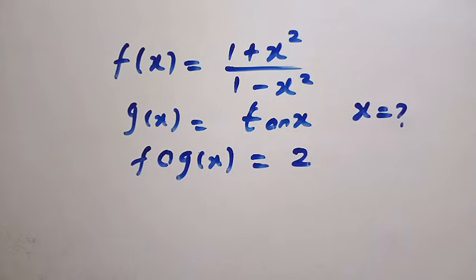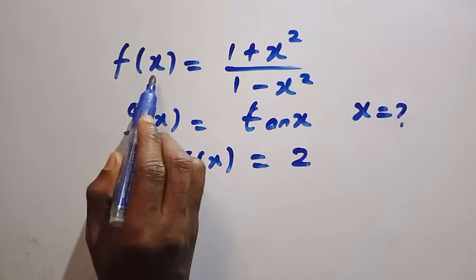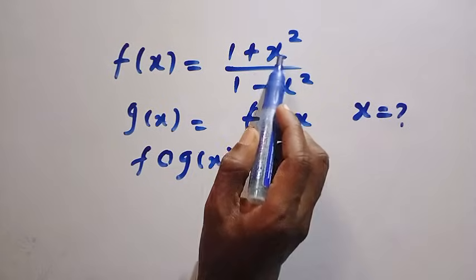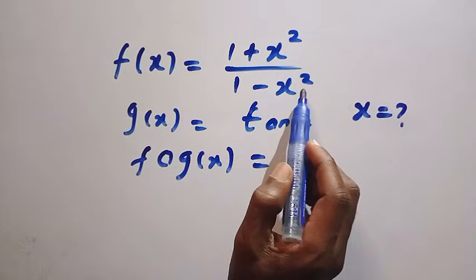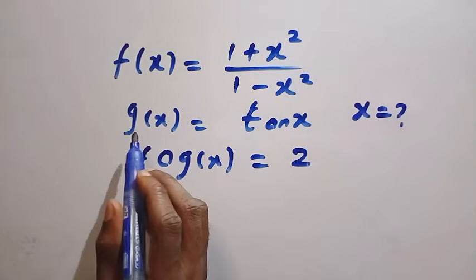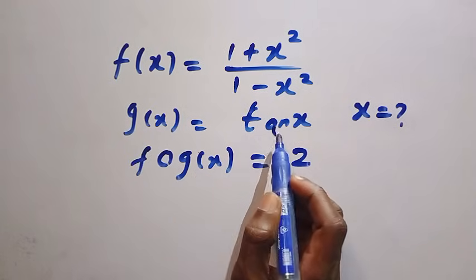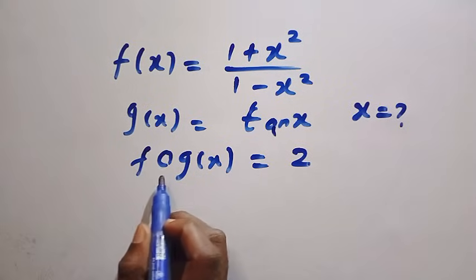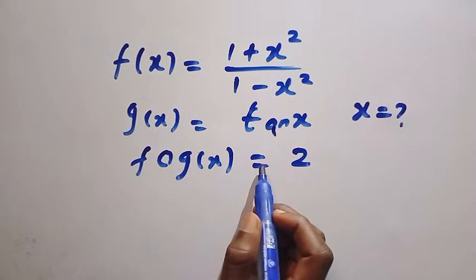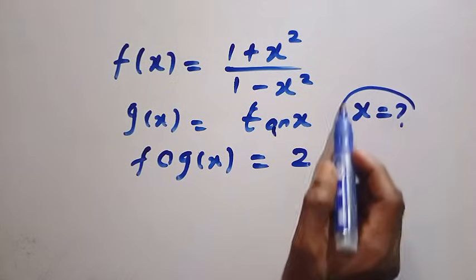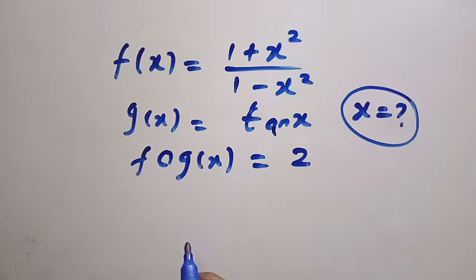Good day viewers, you are welcome. How to solve these nice functional equations: given that f(x) = (1 + x²) / (1 − x²), and also we have another function g(x) = tan x, and also we have a composite function f(g(x)) = 2. Then what is the value of x? How do you solve this problem? Before I solve this, you can try it in the comment box and let's get into it.